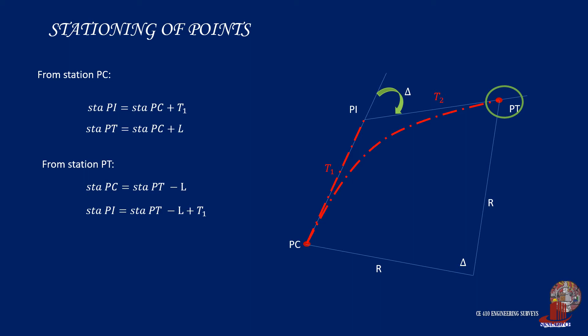Although geometrically speaking, PI can be computed as station PT less the forward tangent, we do not use the forward tangent in stationing.